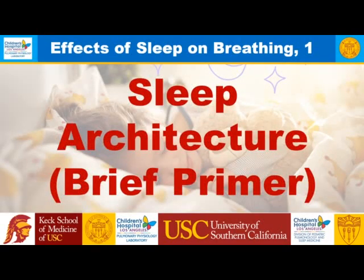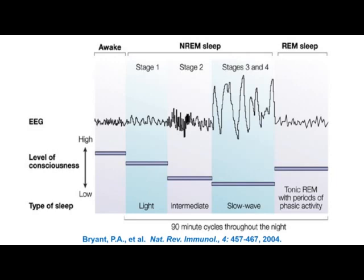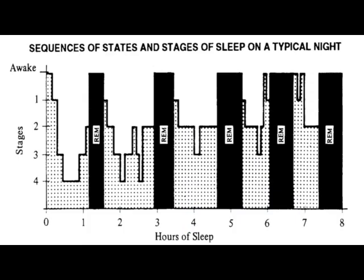First, a brief primer on sleep architecture. There are basically two types of sleep: non-REM sleep — sometimes in infants referred to as quiet sleep — and REM, or rapid eye movement sleep. There are now three stages of non-REM sleep. During the night, one starts awake, goes into non-REM sleep, comes up to a relatively short REM period, then goes into deep non-REM sleep again. As the night goes on, non-REM sleep periods become shorter and REM sleep periods become longer.